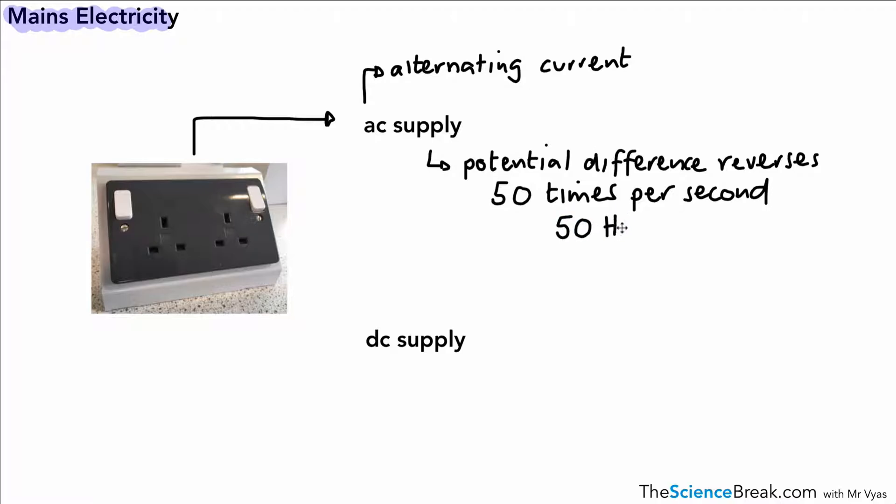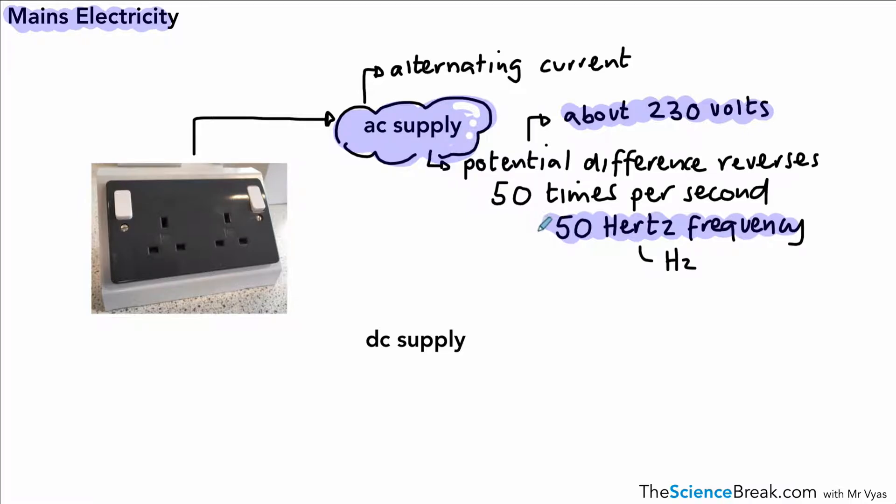We say that has a frequency of 50 hertz. Hertz means cycles or times per second. So it's a 50 hertz frequency. We can abbreviate hertz to Hz. The potential difference is at about 230 volts. So this is our AC supply provided to our homes. And we should actually highlight the fact that we have 50 hertz and 230 volts of potential difference.